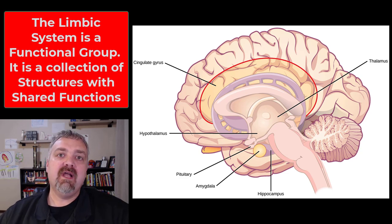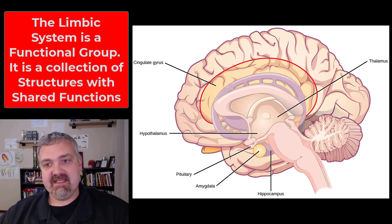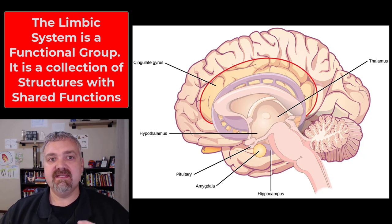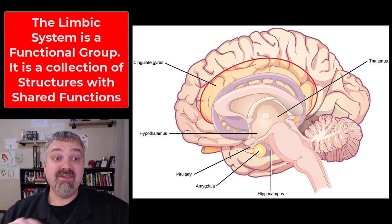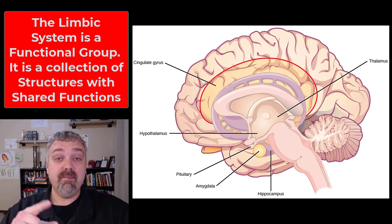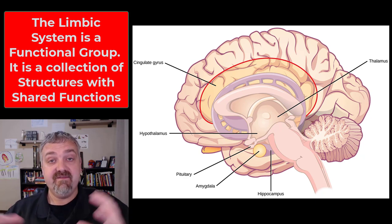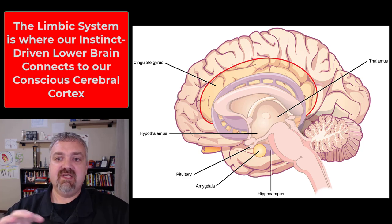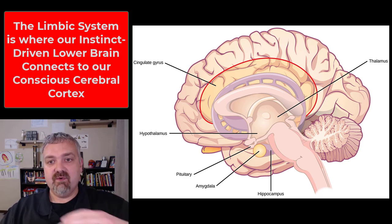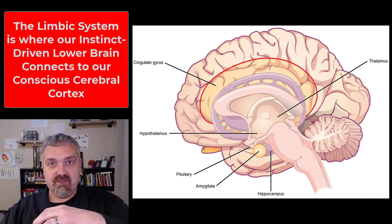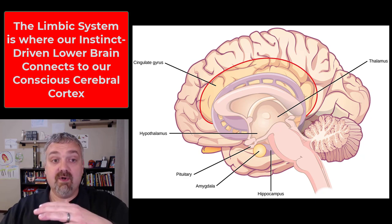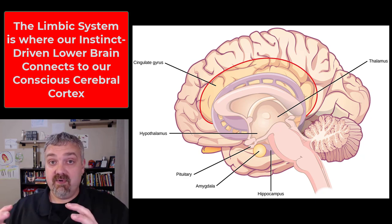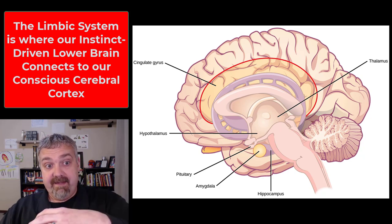Hey everybody, Dr. Rowe here. In this video, we're going to cover the limbic system — the anatomy, structure, and function. It's important to note this is a functional grouping. All the parts of the limbic system function together, but they're not one structure. The limbic system is all these different structures sitting right where the subcortical structures — the things below the cerebral cortex — meet the cerebral cortex. I like to say this is where our lizard brain is being connected to our human brain.